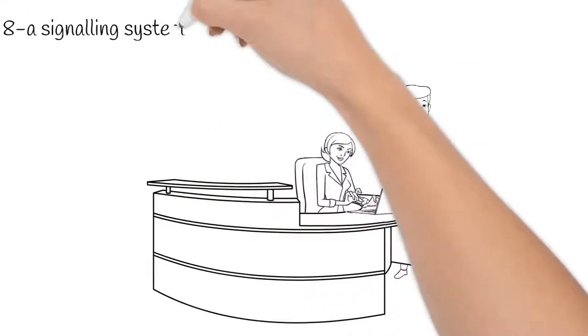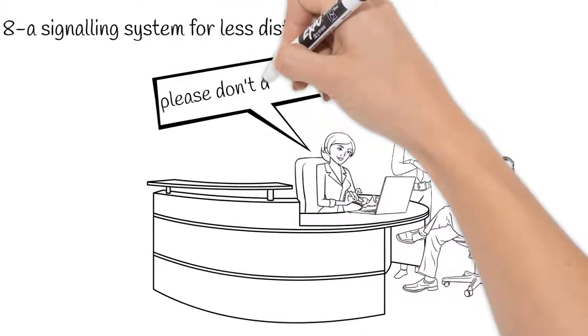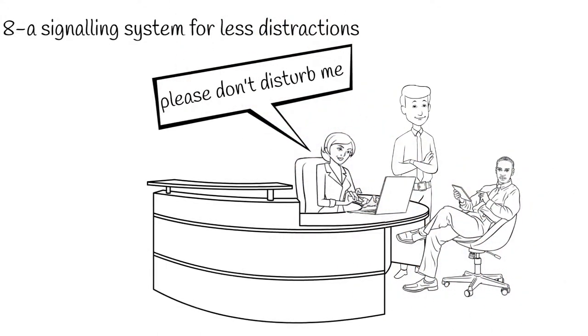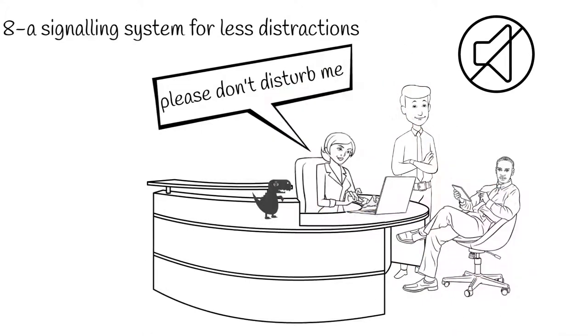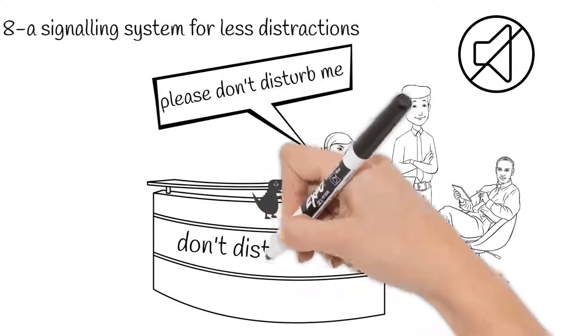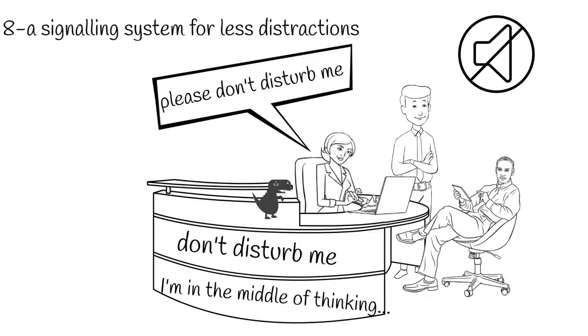Is to avoid interruptions by having some sort of signaling system where you can say, please don't disturb me, I'm in the middle of something difficult. And it might be just that you have some sort of mascot, like a dinosaur, or something that you put on top of your computer screen to say, don't disturb me, I'm in the middle of thinking. But if you all agree to do that in an open plan office, it means that you can work when you don't need to be disturbed.